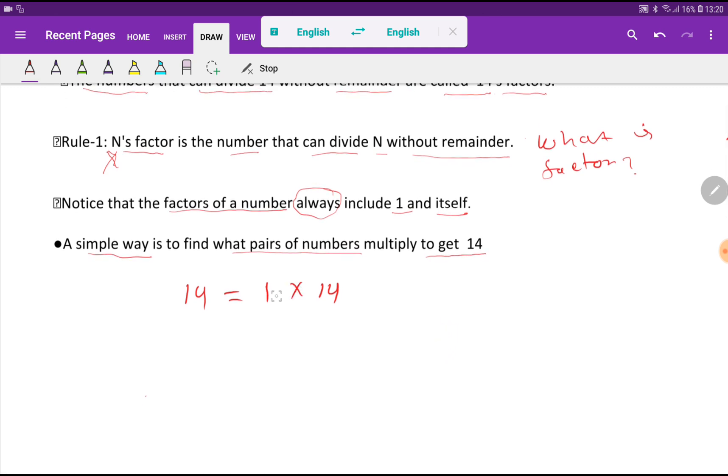Look, if I multiply 1 times 14 then I will get 14. If I divide 14 by 1 I will get 14. And if I divide 14 by 14 then I will get 1. So, 1 and 14 are the factors of 14. I will write here 1, the lowest factor and the highest factor here.